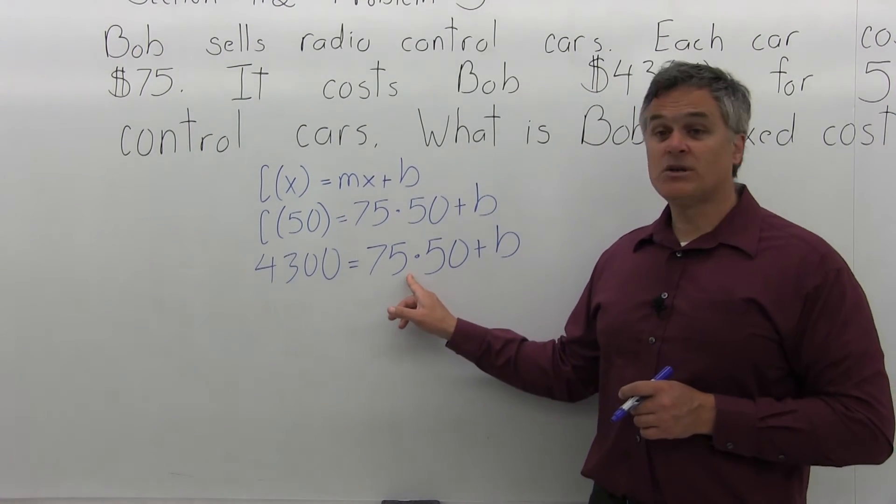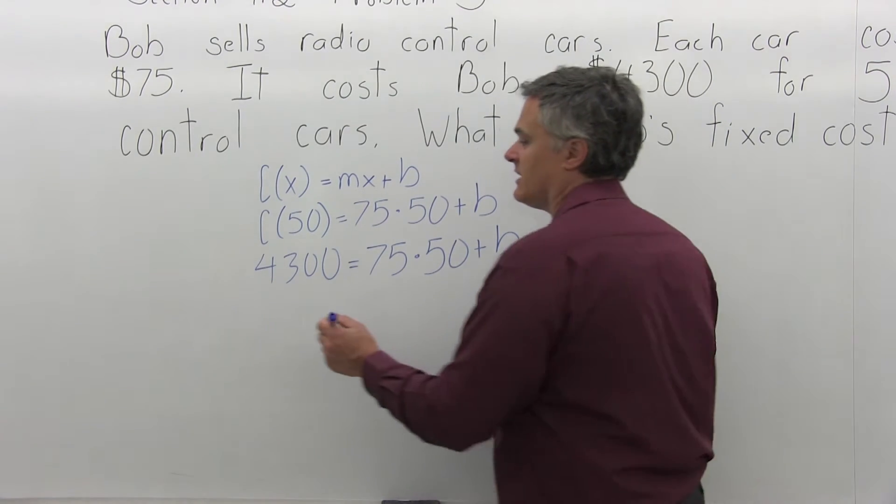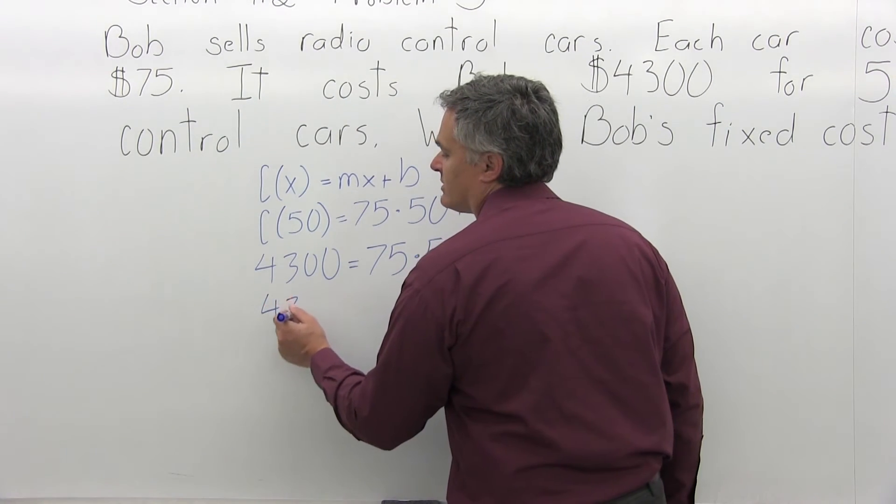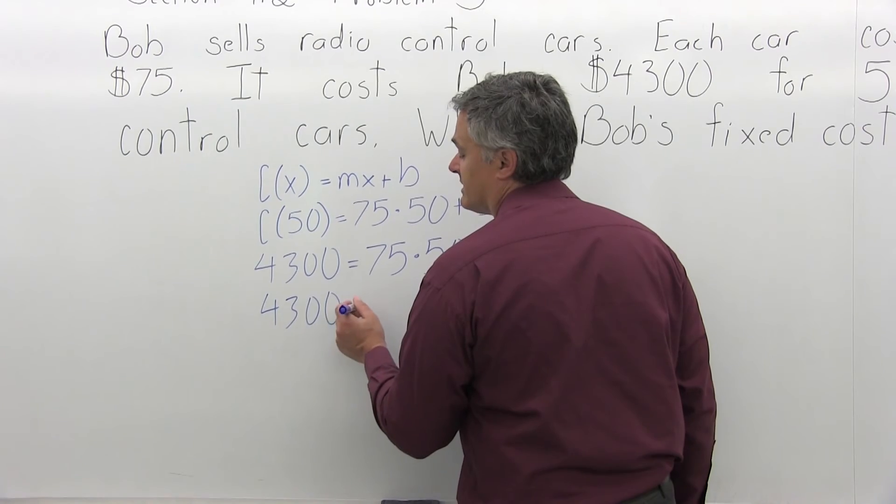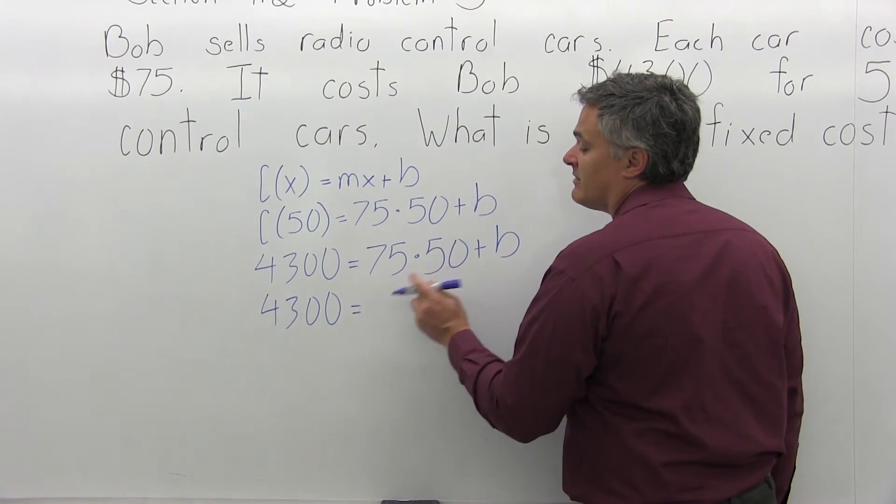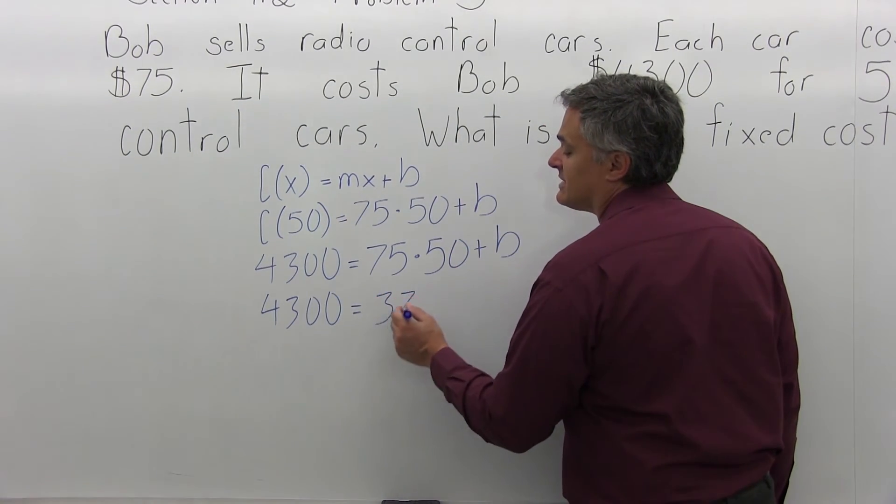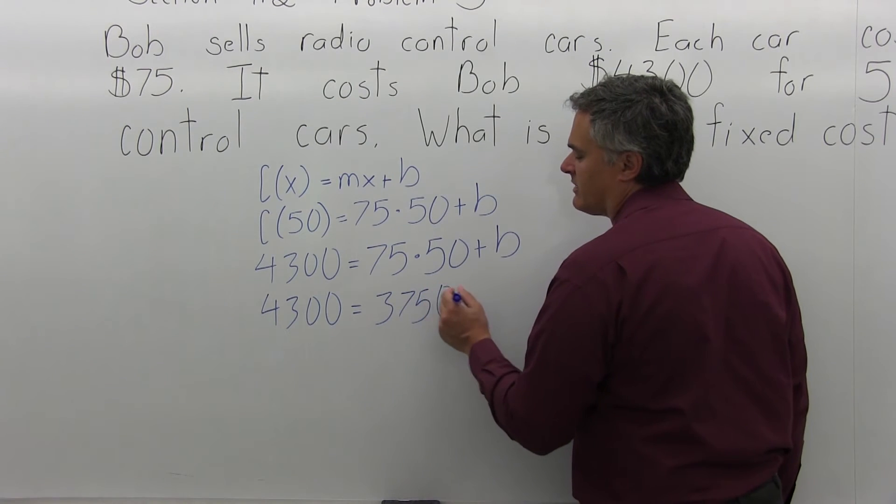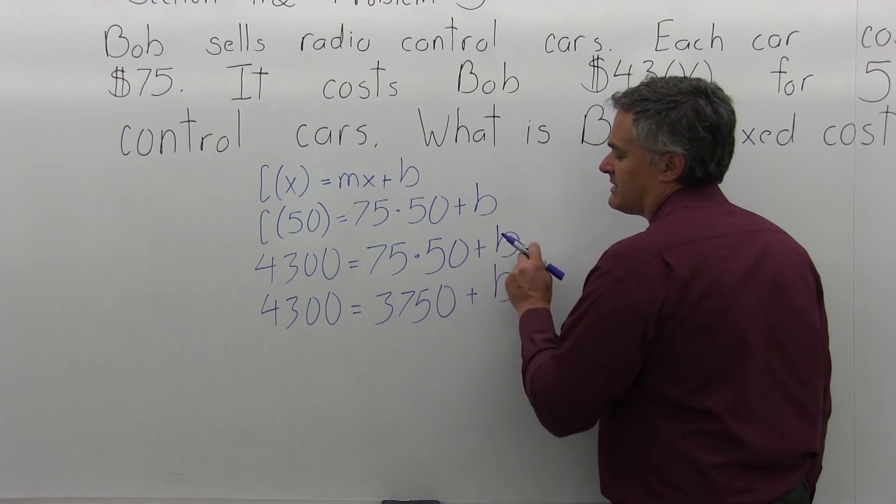So to start this, let me multiply 75 times 50. So the 4,300 will stay on the left for this step. 75 times 50 is 3,750. And you can use your calculator for that. And I still have the plus B.